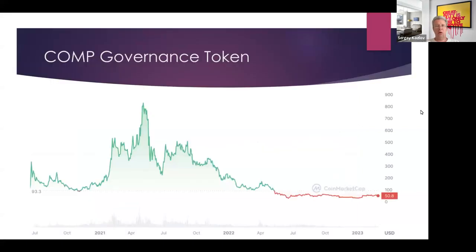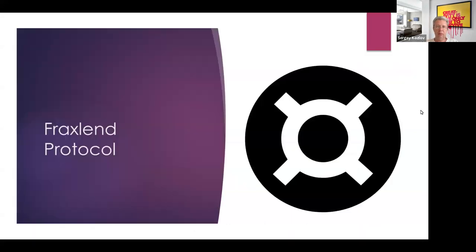The COMP governance token performance is even weaker than Aave's — it was around $800 at its peak and is now at about $50 per token.